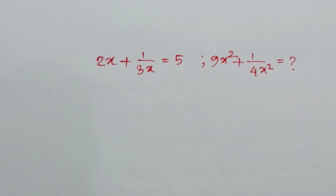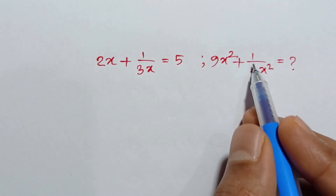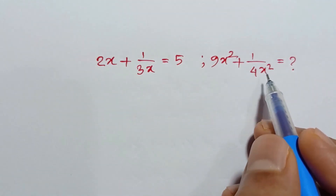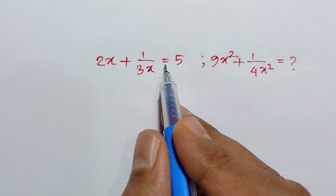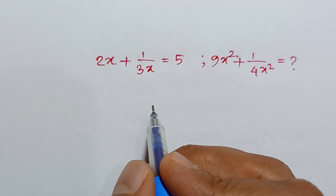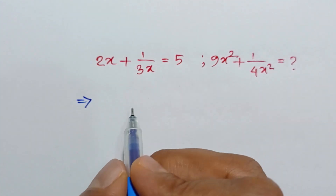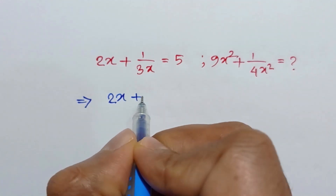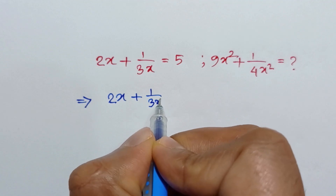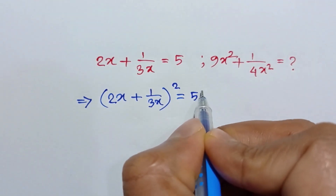Hi everyone. In this video I am going to show how to find the value of 9x squared plus 1 over 4x squared, when twice x plus 1 over thrice x is equal to 5. If we take the square of both sides, we can write: twice x plus 1 over thrice x, whole square, is equal to 5 squared.